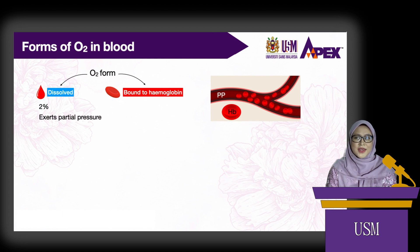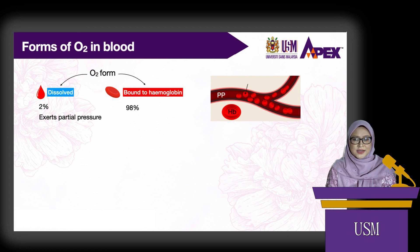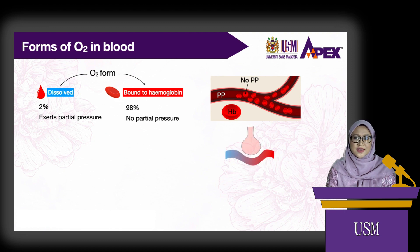On the other hand, the remaining 98% of the total oxygen content of blood is bound to hemoglobin. Because this type of oxygen is bound to hemoglobin, it does not exert any partial pressure. So this keeps the partial pressure of oxygen in the arterial blood lower than in the alveola, and this allows oxygen to always diffuse from the alveola into the blood.